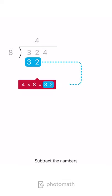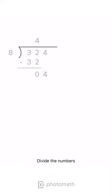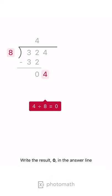Subtract the numbers. Bring down the next digit, 4. Divide the numbers. Write the result, 0, in the answer line.